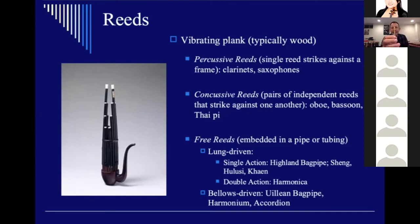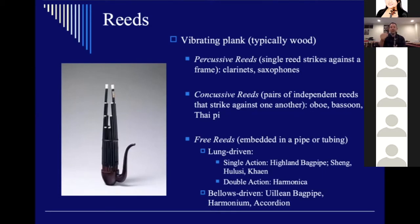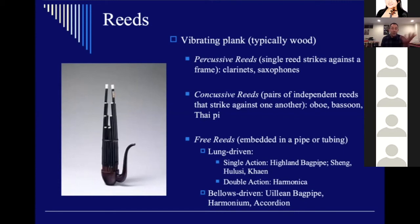A concussive reed uses two reeds — a double reed — where the reeds concuss and hit each other to produce sound. You can play it by itself or put it into an instrument for a fuller demonstration. As you cover the finger holes the tube gets longer and the pitch goes down; as you raise your fingers the pitch goes higher. The oboe, bassoon, and the bai instrument are examples of concussive reed instruments.